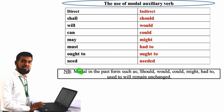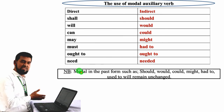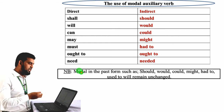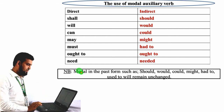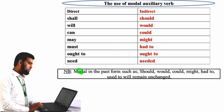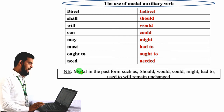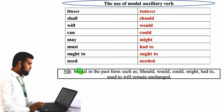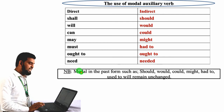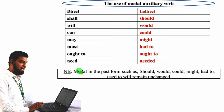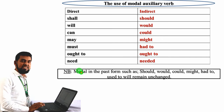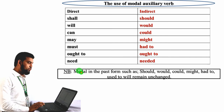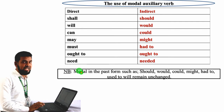The use of modal auxiliary verbs: if you find these modals in the direct speech, they will be changed in the indirect speech as follows. 'Shall' becomes 'should', 'will' becomes 'would', 'can' becomes 'could', 'may' becomes 'might', 'must' becomes 'had to', 'ought to' remains 'ought to', 'need' becomes 'needed'. You should keep in mind that modal auxiliaries already in the past form — such as 'should', 'would', 'could', 'might', 'had to', 'used to' — will remain unchanged.